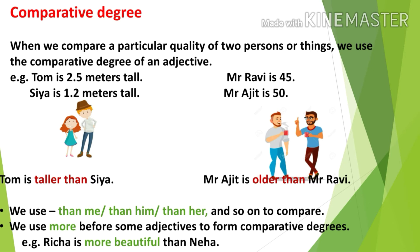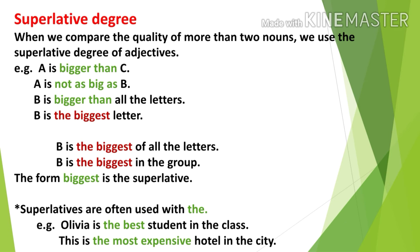In comparative degree we always have two persons or things to compare, and we use 'than' — 'than him,' 'than her,' and so on. We also use 'more' before some adjectives to form the comparative degree. For example, 'Richa is more beautiful than Neha' — here 'more beautiful' is the comparative form, and both Richa and Neha are compared.